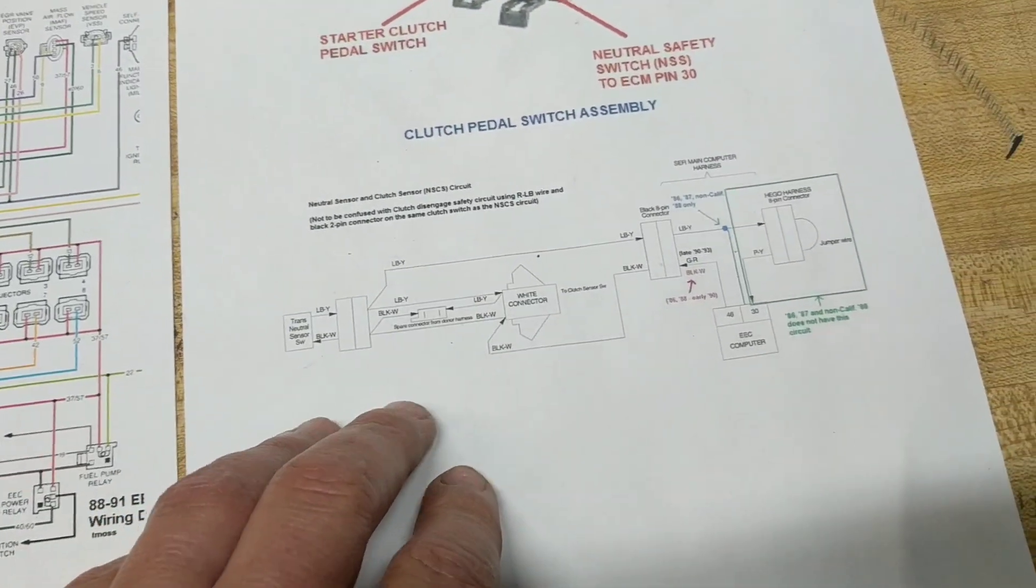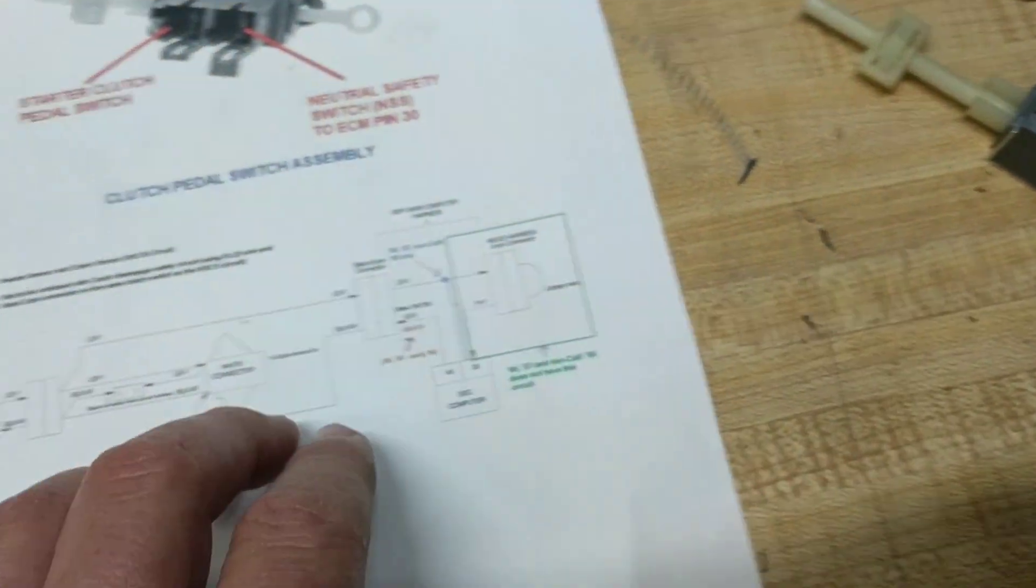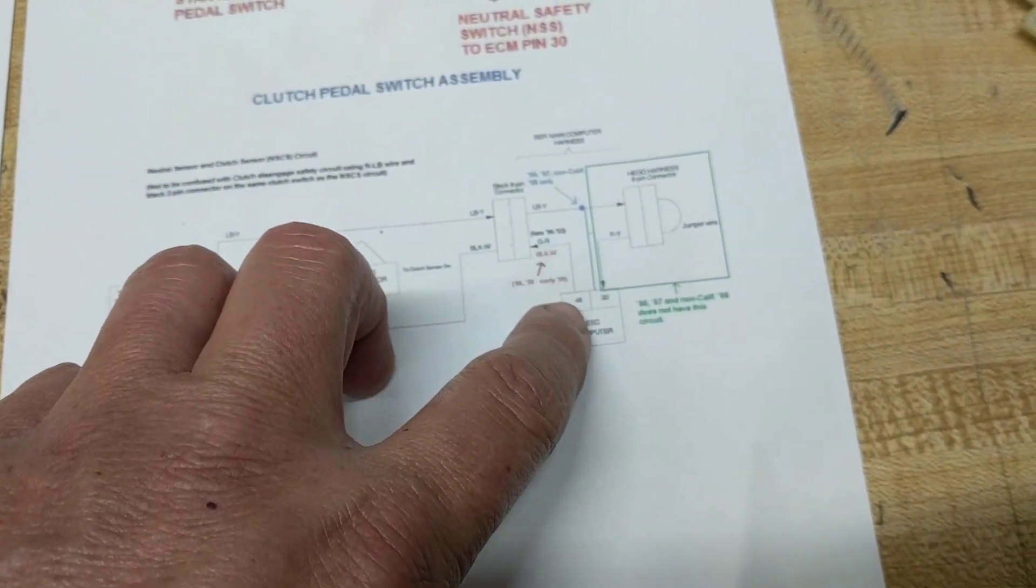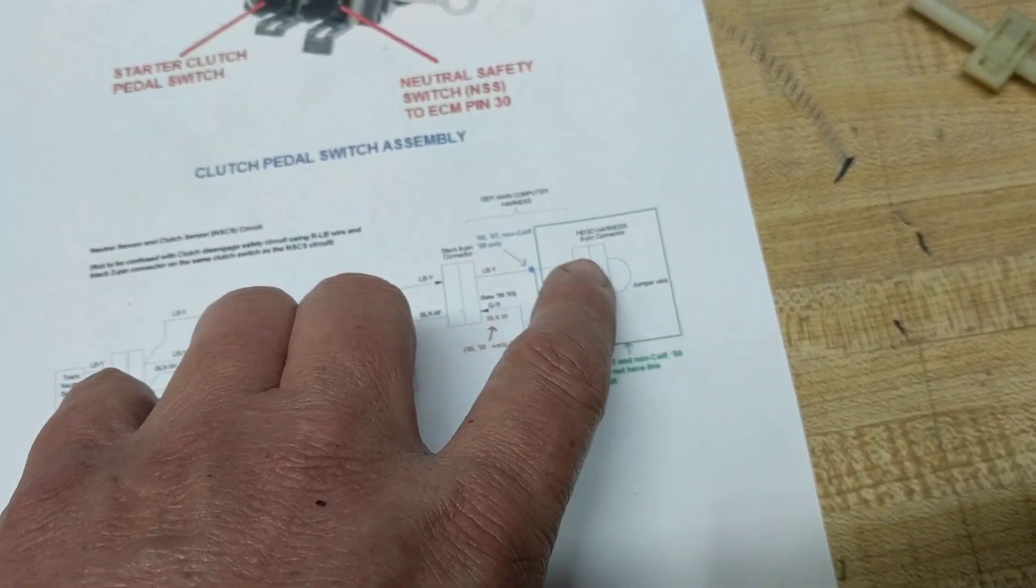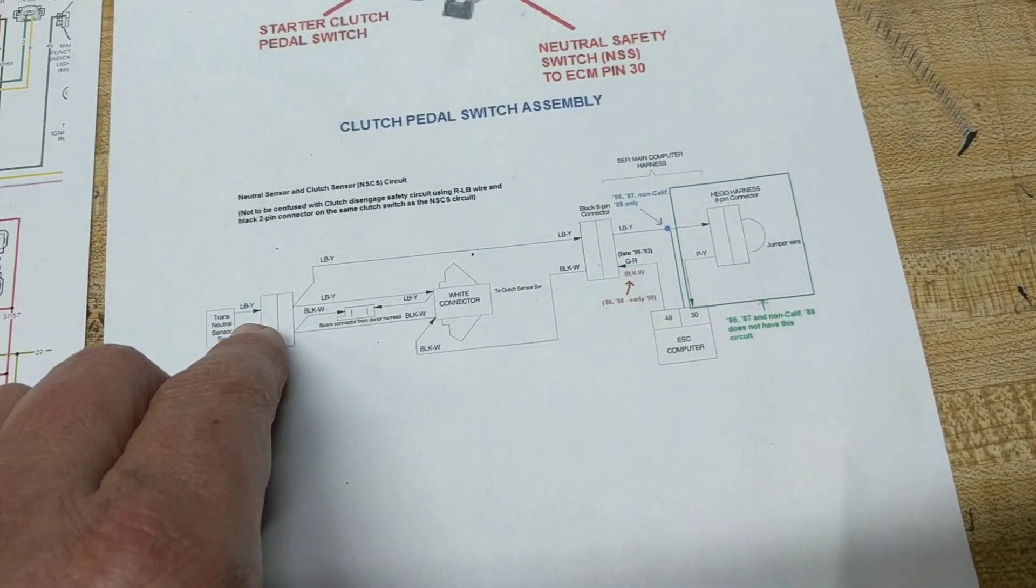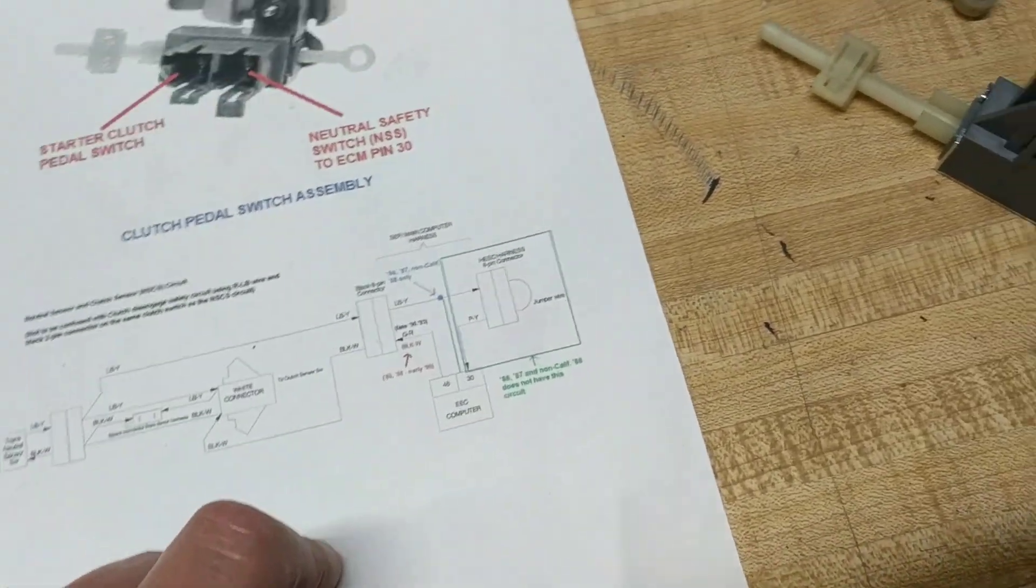This is just a random picture I found. So like I said, this connector goes from the EEC loops through the oxygen sensor harness and then goes through the neutral switch and then back over to pin 46.